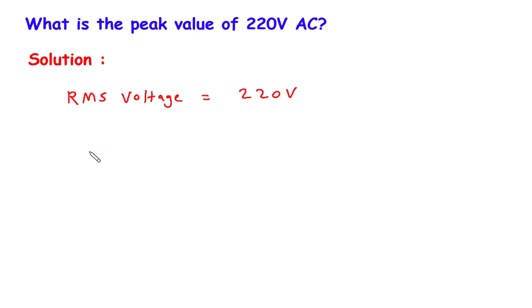There is a formula for RMS voltage. It is VRMS, in short it is called VRMS. VRMS is equal to VM divided by root 2.